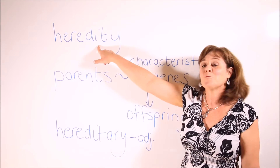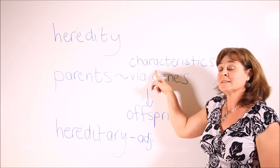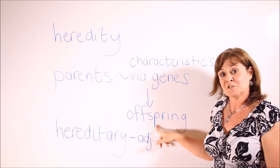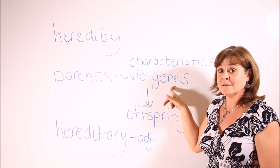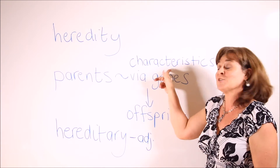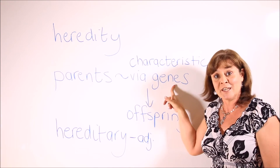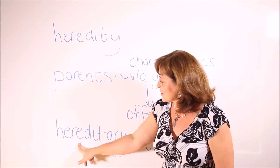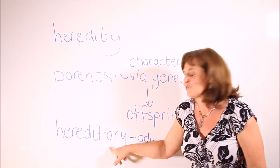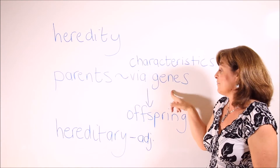We kick off with the word heredity. Heredity is the passing on of mental and physical characteristics from parents to their offspring via genes. In other words, the offspring inherit certain characteristics from their parents via structures called genes. The adjective we use is hereditary — certain characteristics are hereditary, meaning they are inherited from the parents via the genes.